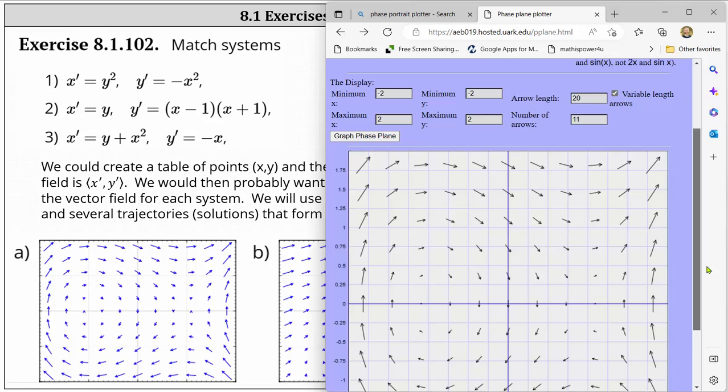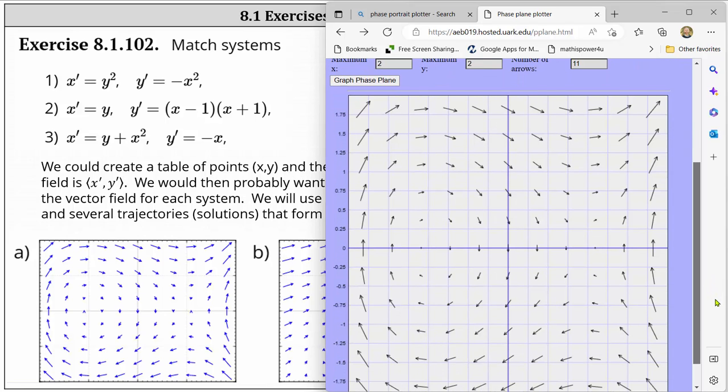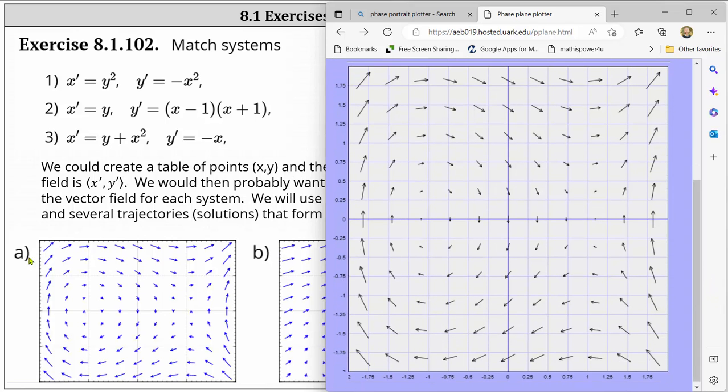Scroll down. And this looks pretty good. We can actually see this matches the vector field given by a. Let's click on some points to see some trajectories.